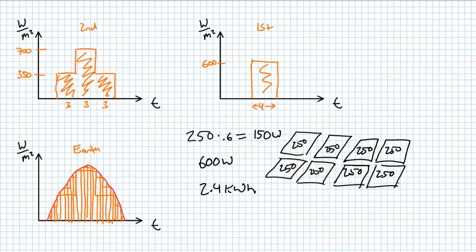An array of twice the size, or 2 kilowatt array, would produce twice the energy, or 4.8 kilowatt hours.